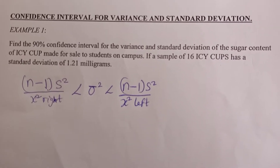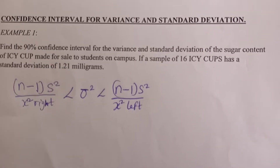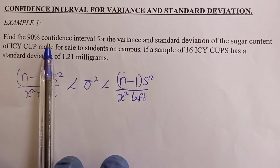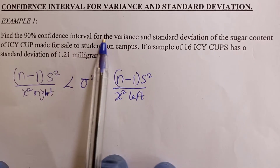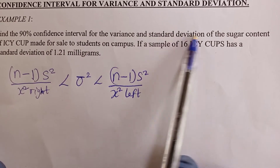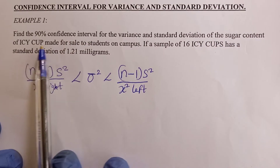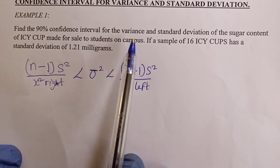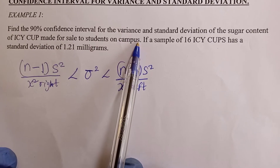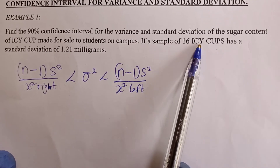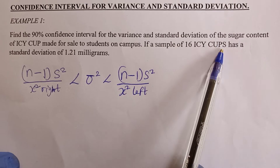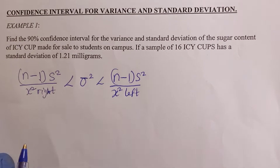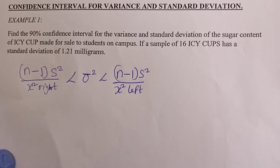Let's look at how to estimate a confidence interval for variance and standard deviation. The question says: find a 90% confidence interval for the variance and standard deviation of the sugar contents of energy carbs made for students on campus, if a sample of 16 energy carbs has a standard deviation of 1.21 milligrams.